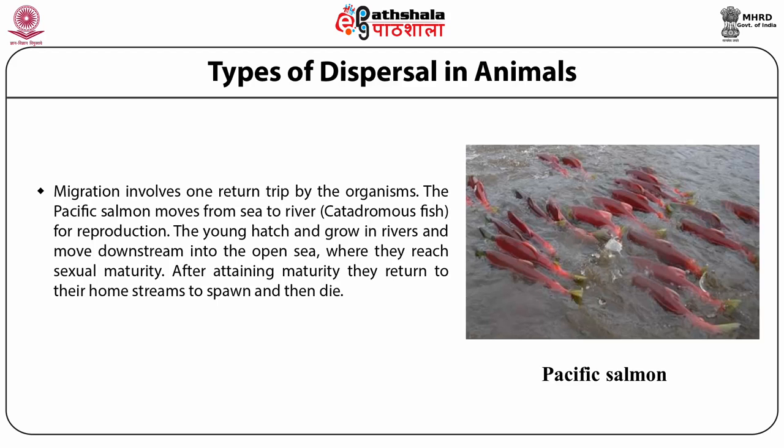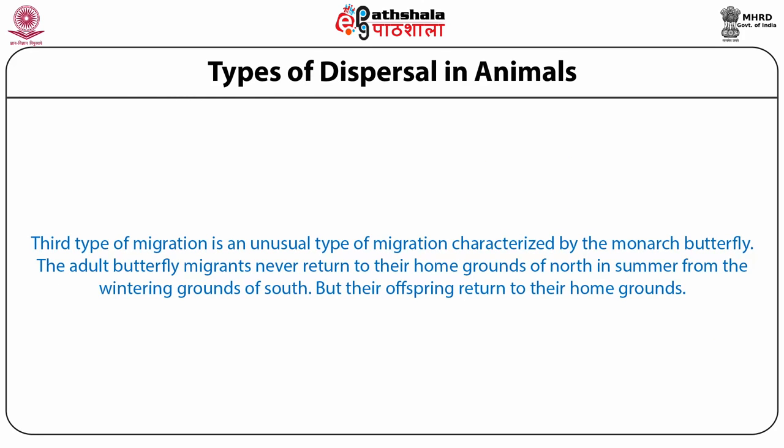These fishes are called catadromous fishes and this type of migration is known as catadromous migration. A third type is an unusual migration characterized by the monarch butterfly. The adult butterfly migrants never return to their home grounds in the north in summer from the wintering grounds in the south, but their offspring return to their home grounds. Some leaf hoppers, some bugs, and the milkweed bug undertake similar but less extensive migration.